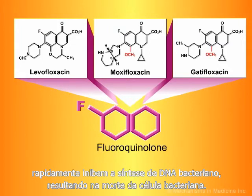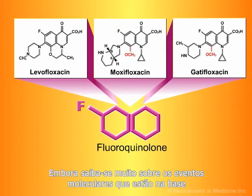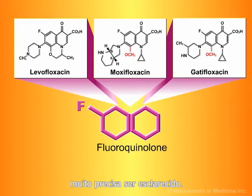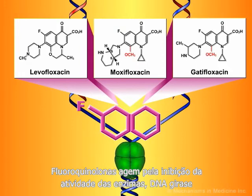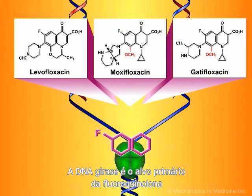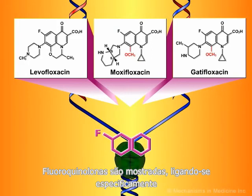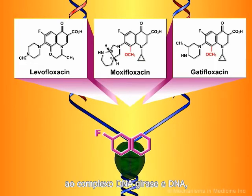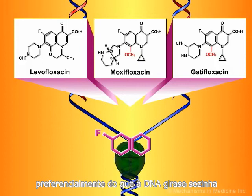Fluoroquinolones rapidly inhibit bacterial DNA synthesis, resulting in bacterial cell death. Although much is known about the molecular events that underlie the action of quinolone antibiotics, much remains to be clarified. Fluoroquinolones act by inhibiting the activity of both the DNA gyrase and the topoisomerase 4 enzymes. For most gram-negative bacteria, DNA gyrase is the primary fluoroquinolone target.